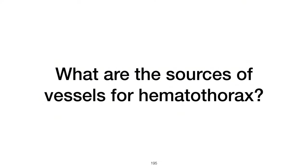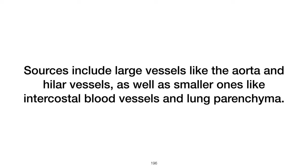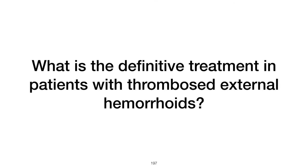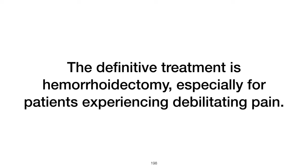What are the sources of vessels for hemothorax? Sources for hemothorax include large vessels like the aorta and hilar vessels, as well as smaller ones like intercostal blood vessels and lung parenchyma. What is the definitive treatment in patients with thrombosed external hemorrhoids? The definitive treatment for patients experiencing debilitating pain is hemorrhoidectomy; conservative management is recommended for those with milder pain.